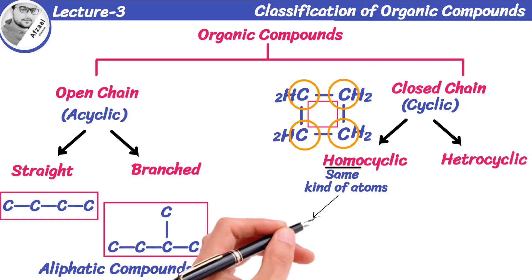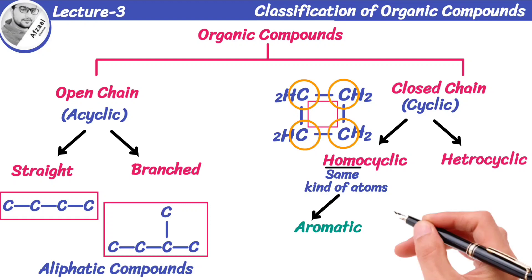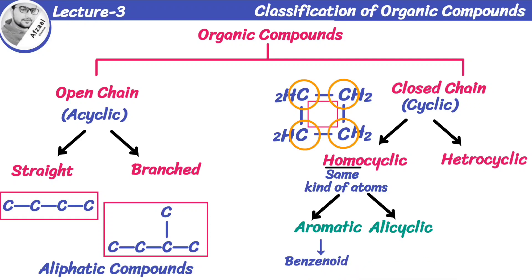These are further divided into two classes, aromatic compounds and alicyclic compounds. Aromatic compounds are also called benzenoid compounds because they contain at least one benzene ring in their molecule, that is made up of six carbon atoms with three alternating double and single bonds.